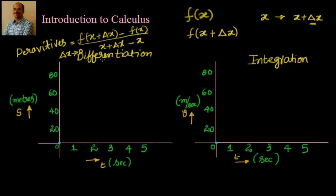Differentiation is identified with finding the slope of a line. If you have a function and graph it as a curve, by finding the derivative you can find the slope of the tangent to the curve at a particular point. Differentiation also helps you find instantaneous velocity — if you know the distance covered over time, you can find velocity by differentiation.